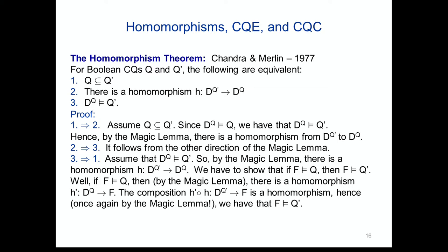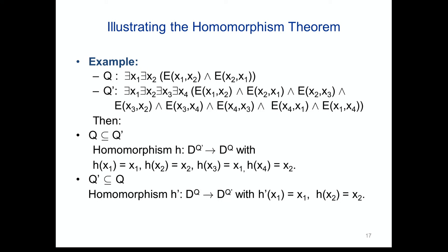Two applications: first, the queries 'there is an undirected edge' and 'there is an undirected cycle of length four' are equivalent because there are homomorphisms going both ways — both graphs are two-colorable. Second, revisiting three-colorability from the database perspective: a graph G is three-colorable if and only if there is a homomorphism from G to K3. By the Chandra-Merlin theorem, this is equivalent to a query evaluation problem and to a conjunctive query containment problem.